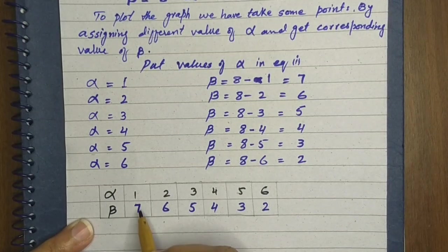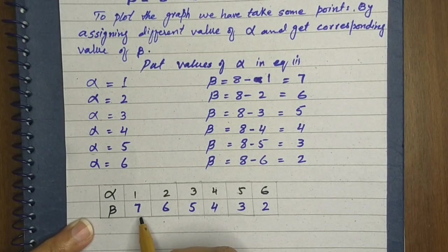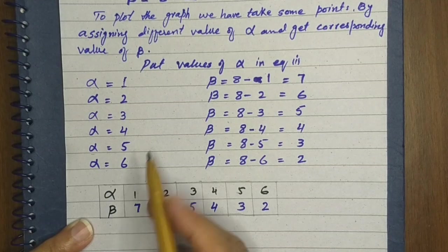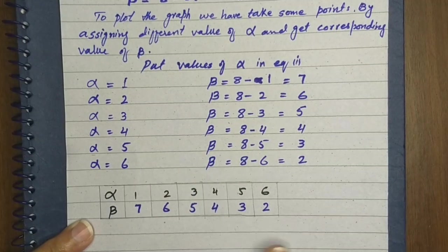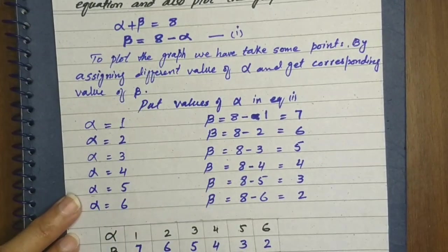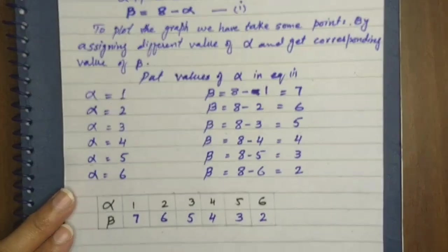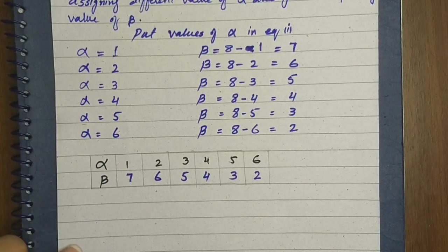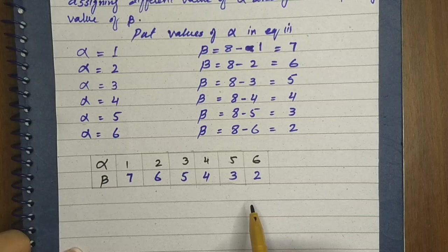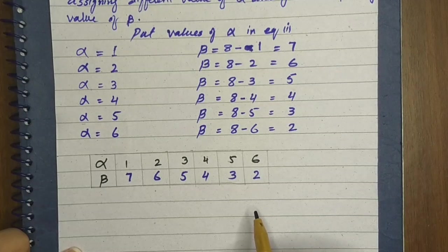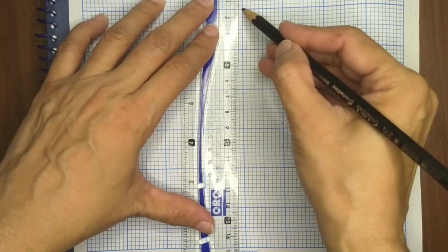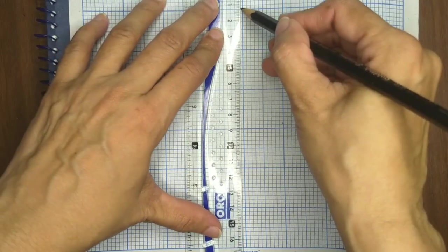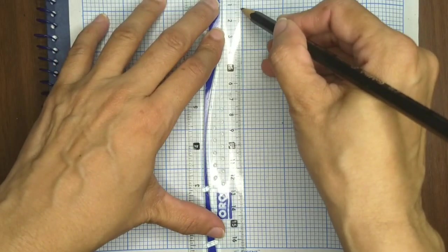Now let's see — if we add these values, alpha plus beta always equals 8, which satisfies the given equation. Now let's make this graph. We can represent this graph with the help of this table.